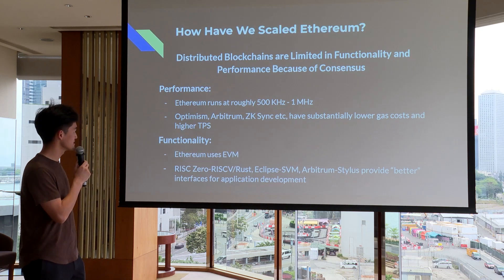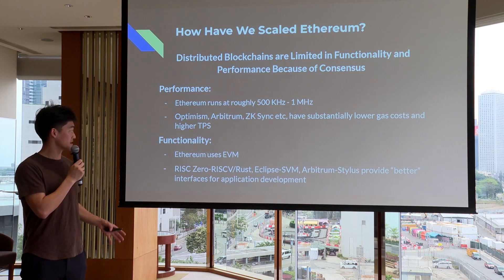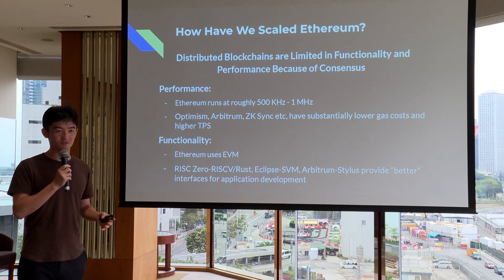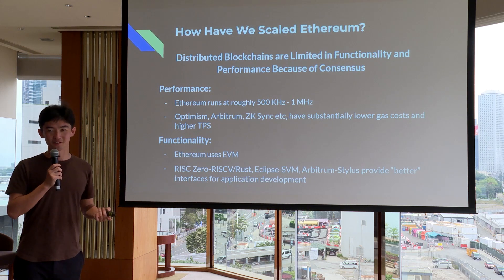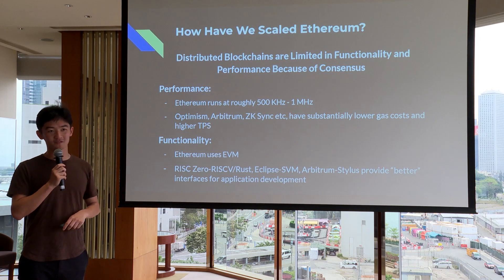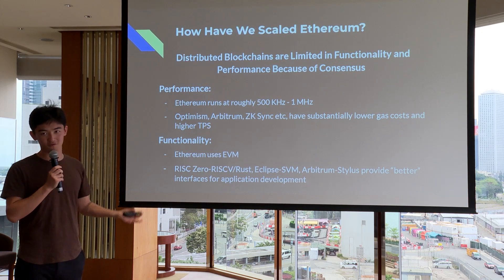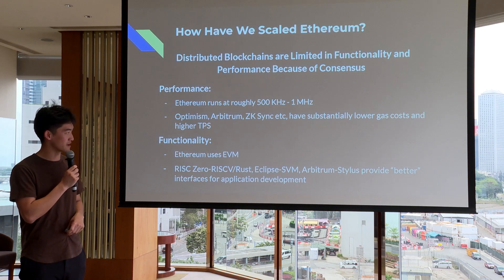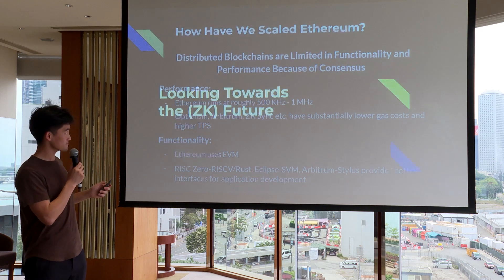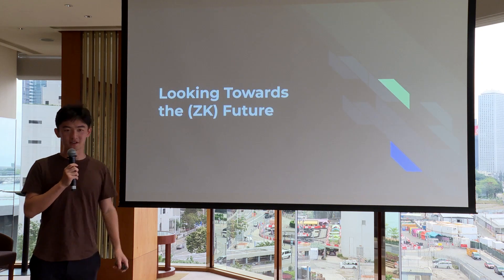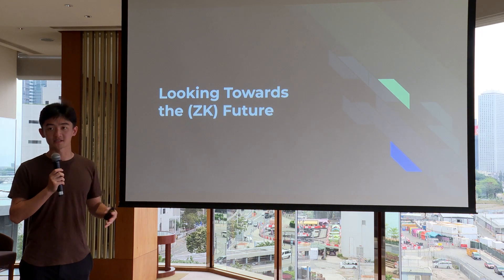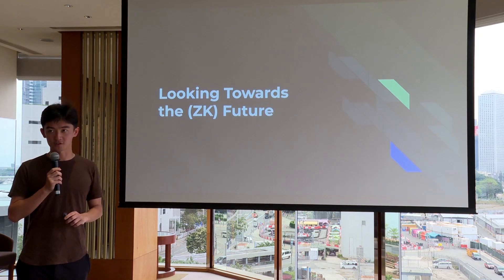On the functionality side, Ethereum uses the EVM, which is a restrictive and unusual virtual machine custom-built for consensus, making it quite difficult for developers. There have been alternatives: Solana built SVM, Move VM exists, at RiscZero we've built the RISC-V VM, and Arbitrum has Stylus enabling developers to code in Rust. That covers how we've thought about scaling — but now, given improvements in ZK, what does the ZK future look like?